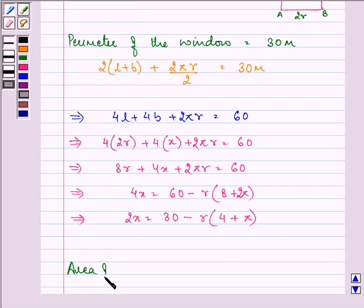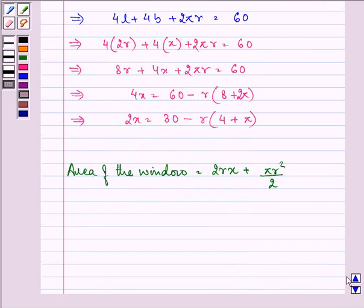The area of the window is equal to area of the rectangle, that is, length into breadth, length is 2r and breadth is x, plus area of the semicircle, that is, pi r square upon 2. Now, here in place of x, we can write down 30 minus r times (4 plus pi) plus pi r square upon 2.